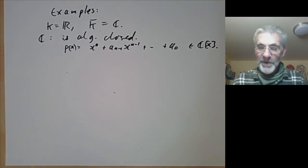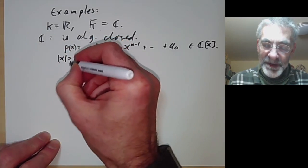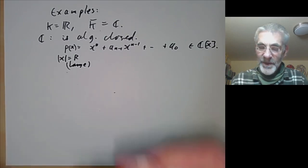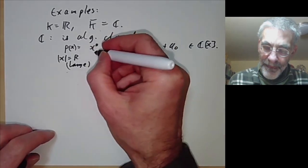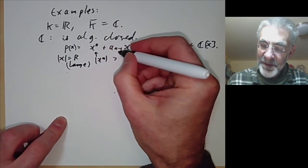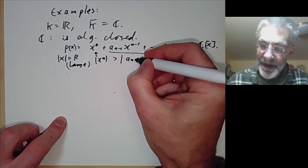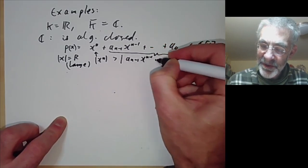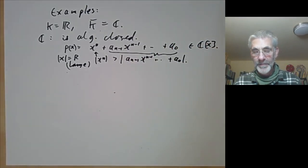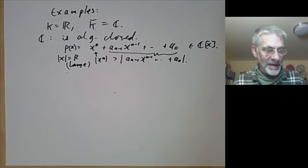What you notice is that if x is large — say x has absolute value r, sufficiently large — then |x^n| is bigger than |a_{n-1}x^{n-1} + ... + a_0|. In fact you can assume it's much bigger. And that's pretty much all we need to know to show that it's algebraically closed.